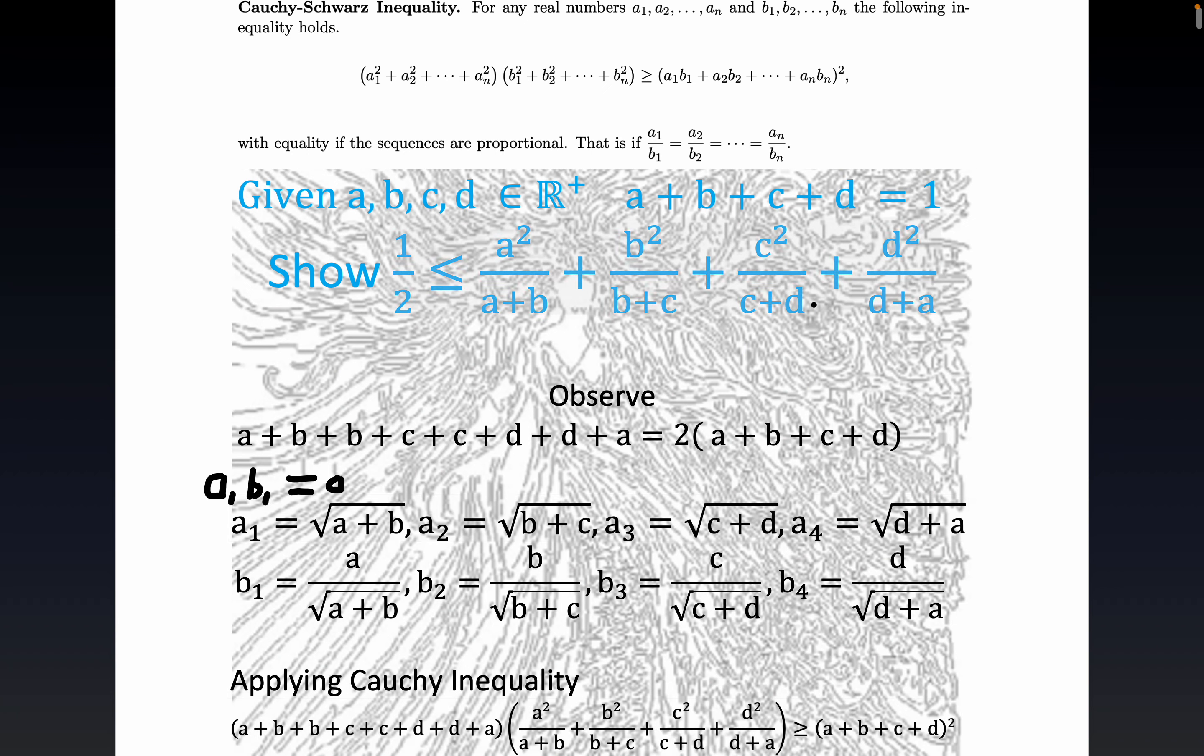I mean it's just directly what I just said, this right-hand side is going to become this based on this observation right here, okay. And then also the left-hand side, you see the a sub i squareds are just a+b, b+c, c+d, and d+a.